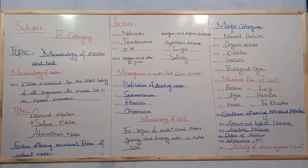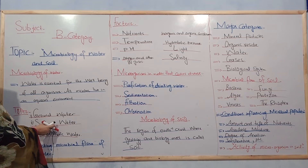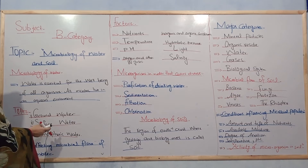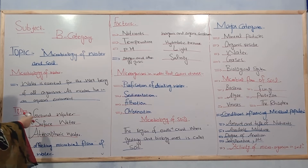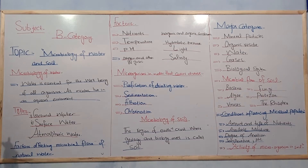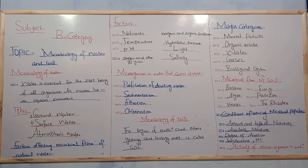The second type is surface water. Surface water includes sources like streams, lakes, and shallow wells.